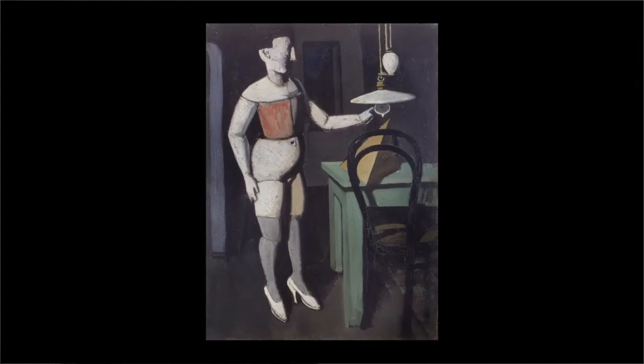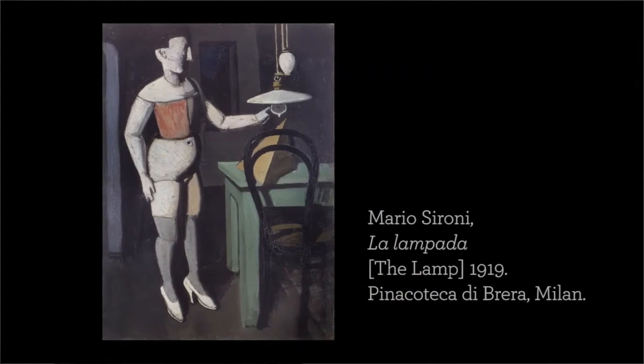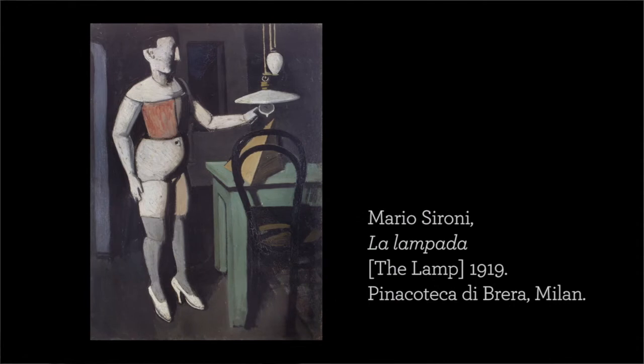The title of this work is The Lamp, and it was painted by Mario Sironi in 1919. In this painting, it is possible to trace Sironi's shifts that occur in the post-war period. Sironi had participated in the Futurist movement since 1913, and he doesn't totally abandon this background.